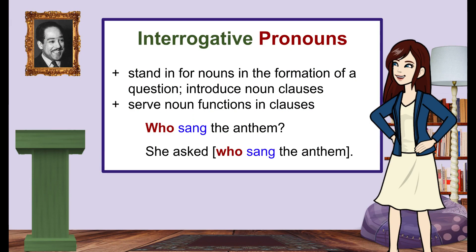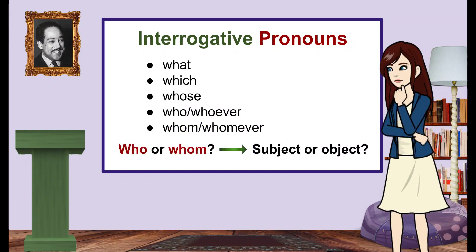Interrogative pronouns stand in for nouns in the formation of a question, as in the example 'Who sang the anthem?' They can also introduce noun clauses, which is asking an indirect question: 'She asked who sang the anthem.' In both the independent and dependent clauses here, the interrogative pronoun 'who' is acting as the subject of the verb 'sang.' Here is a list of the interrogative pronouns — take a minute to write them down in your notes.